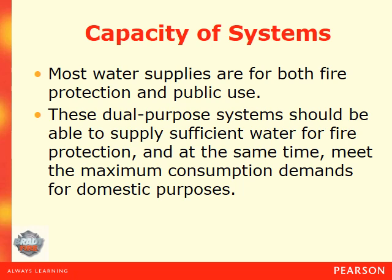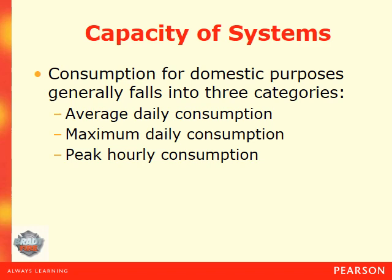Most water supplies serve both fire protection and public use. These dual purpose systems should be able to support sufficient water for fire protection while also meeting maximum consumption demands for domestic purposes. Consumption for domestic purposes generally falls into three categories: average daily consumption, maximum daily consumption, and peak hourly consumption. Peak is when everybody's home and decides to wash clothes, flush the toilet, or take a shower. Maximum is how much water can be put through the system, and average is just how much water is used throughout the day.